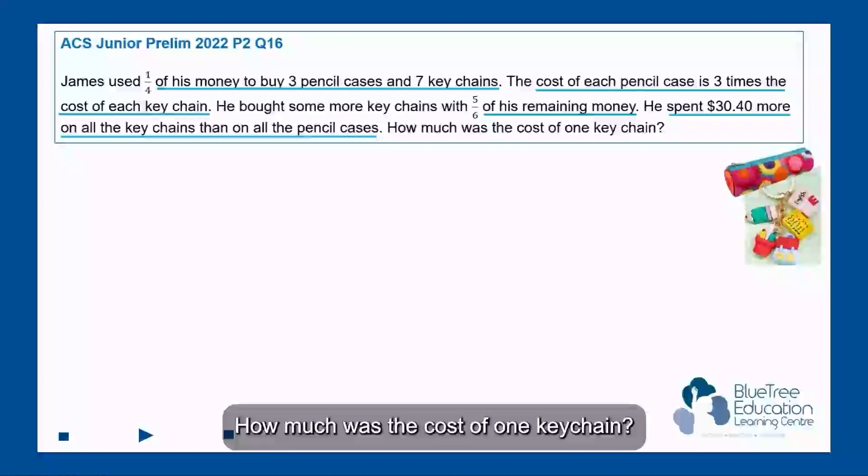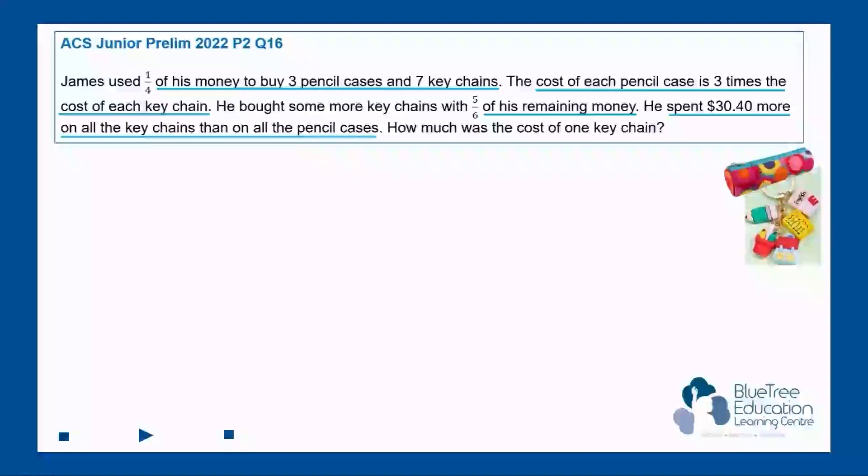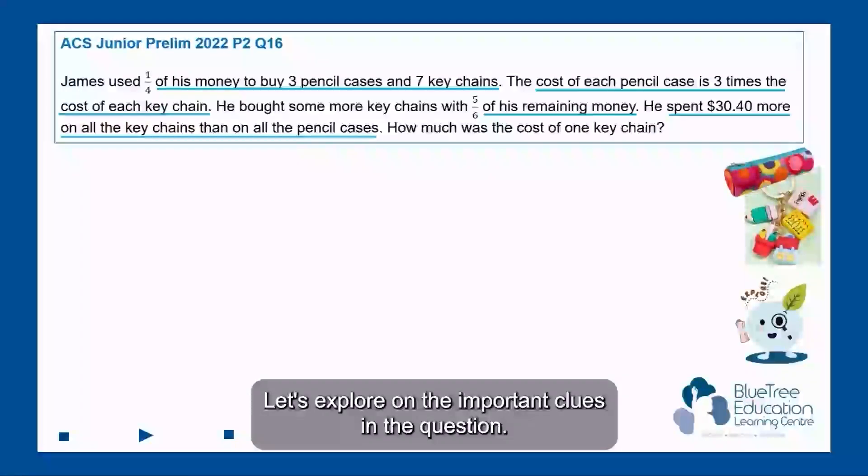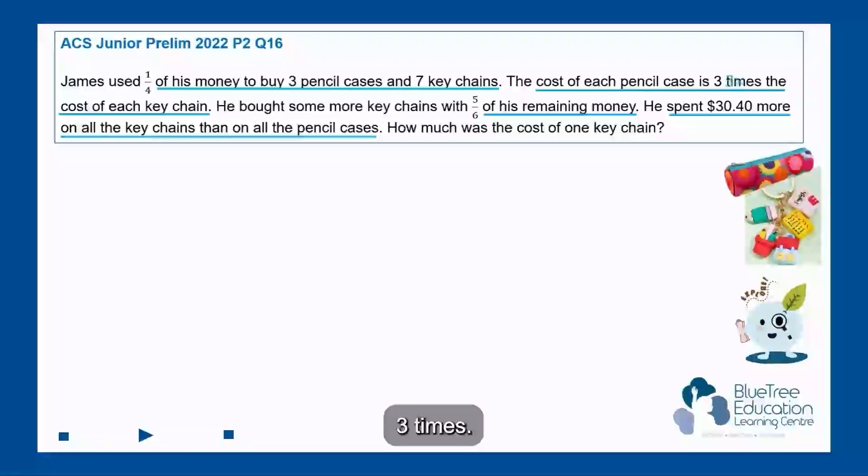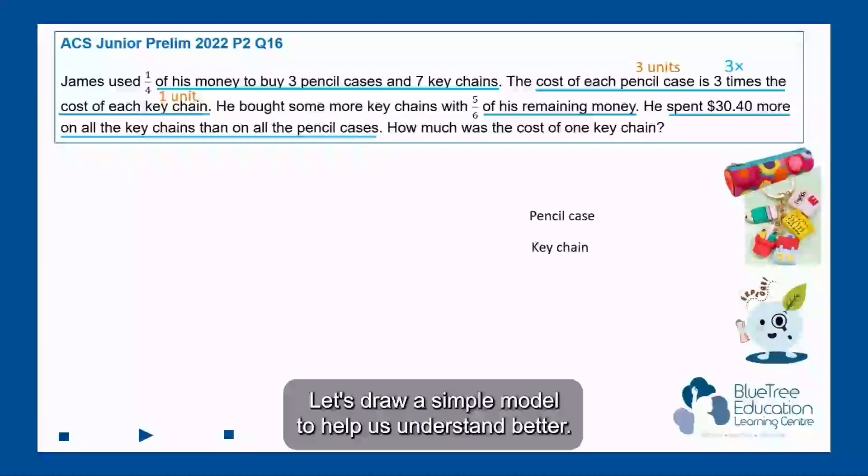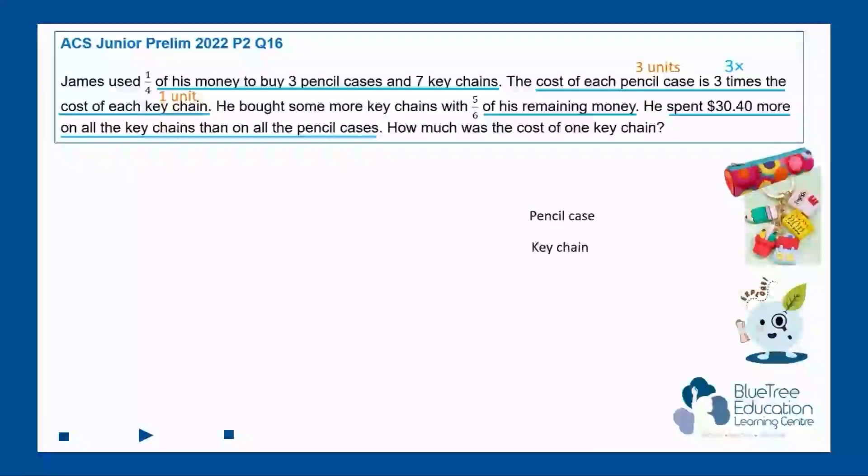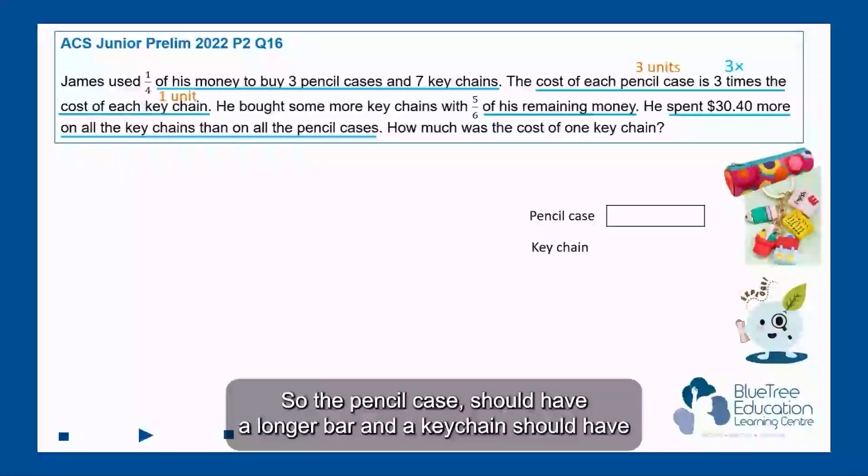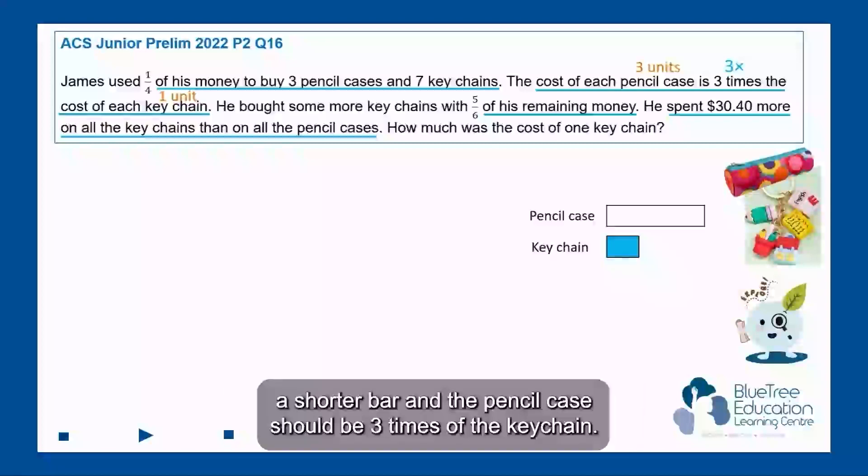How much was the cost of one keychain? Let's explore the important clues in the question. Three times, so each pencil case will be three units and each keychain will be one unit. Let's draw a simple model to help us understand better. So the pencil case should have a longer bar and the keychain should have a shorter bar, and the pencil case should be three times the keychain.